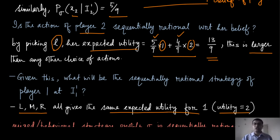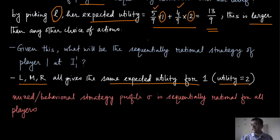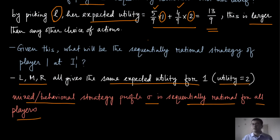The final point is to discuss sequential rationality at the root node — whether player one is doing the right thing at x1. You can verify that for l, m, and r, no matter which action player one picks, all of them give the same expected utility equal to 2. So no matter how player one mixes the strategies, all are sequentially rational. Stitching all these steps together, we can say that this behavioral strategy profile sigma is actually sequentially rational for all players. This example lays the foundation of how we develop the notion of sequential rationality in the context of imperfect information extensive form games.